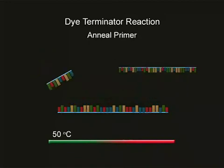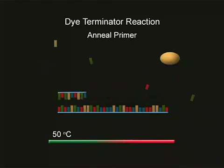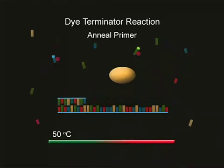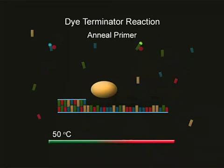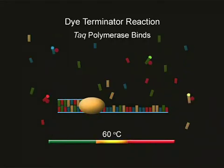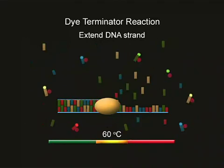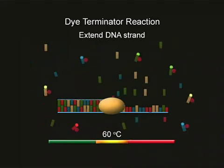Second, the reaction mixture is cooled down to 50 degrees Celsius, so that the oligonucleotide primer can base pair with or anneal to the DNA template. Third, the reaction is warmed up to 60 degrees Celsius, so TAQ DNA polymerase can perform DNA synthesis.